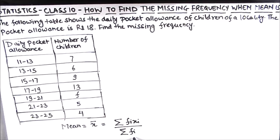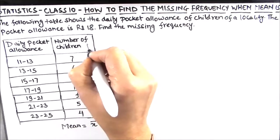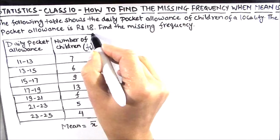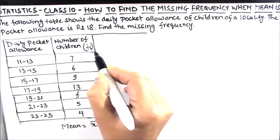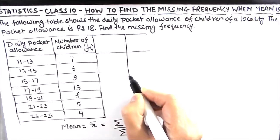So the number of children column is our frequency column, so we will write it fi here. And we will make one more column here where we are going to find the xi term, which is called the mid term.